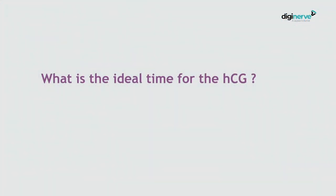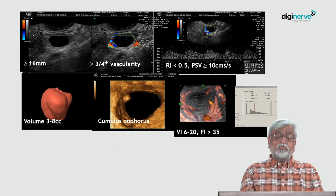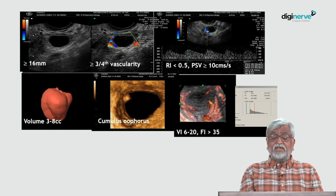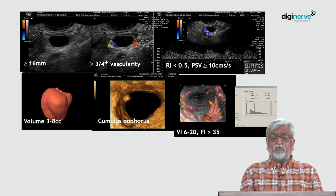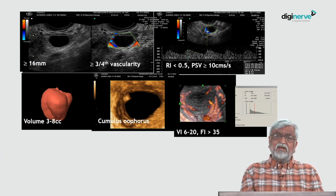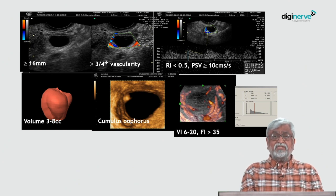What is the ideal time for giving hCG? When you are doing 2D, the follicle size should be 16 millimeters. You should apply color Doppler — it should show three-fourths vascularity, RI should be less than 0.5, and PSV should be more than 10. These are the minimum requirements for a successful IUI. You cannot rely on 2D alone because 2D does not tell you the functional maturity of the ovum.